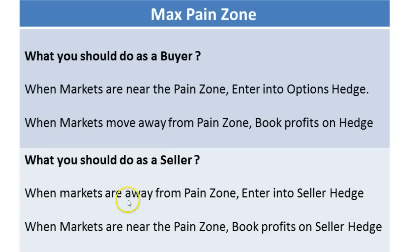As a seller, when markets are away from the pain zone by 200 to 300 points, enter a seller hedge by selling contracts far out of the money on both sides. Wait for markets to go near the pain zone, and when they do, book profits on the seller hedge and wait for the next opportunity. Subscribe to our YouTube channel for more videos and check out BAC2NSE.com for our free training service. Thank you, bye.